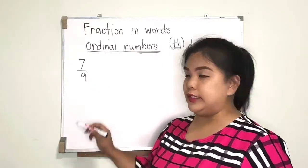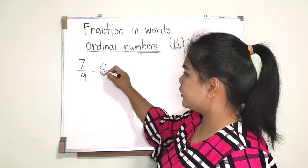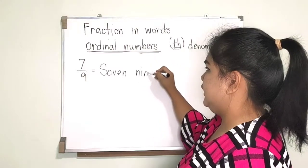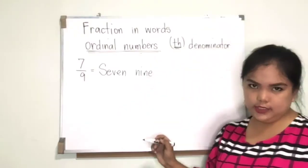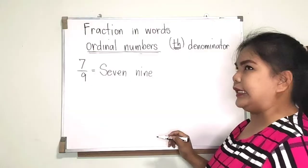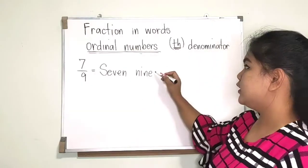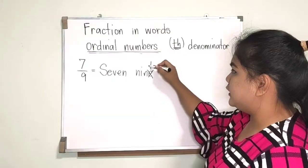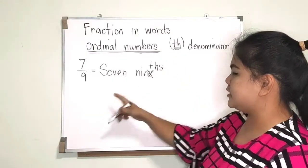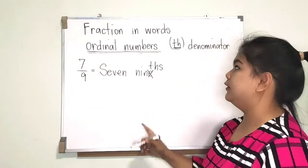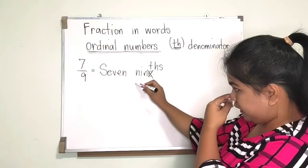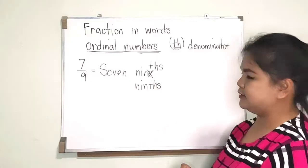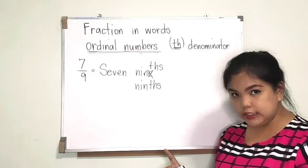How about 7/9? For seven ninths, you write 'seven' and then — even though 'nine' is spelled N-I-N-E — in writing fractions in words, we do not keep the E. We just add TH and then S because seven is more than one. So it is N-I-N-T-H-S. No E. 'Seven ninths.'